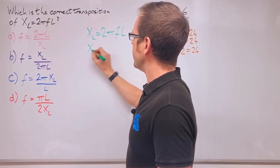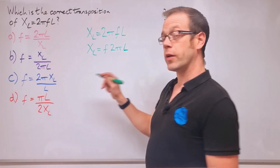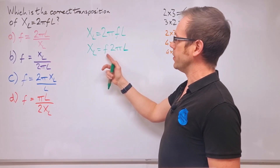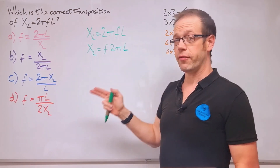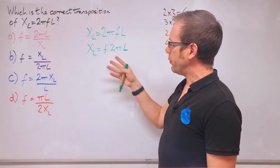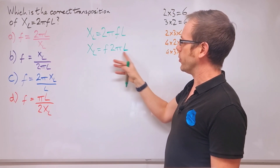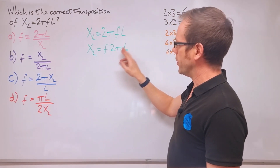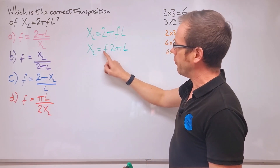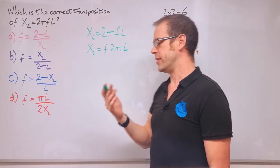So we can jumble this up and rewrite it as XL equals f times 2πl. We've just rearranged the order of the multiplication — it's the same long string of multiplication, just in a different order, and changing the order of multiplication doesn't change the final outcome. Now we can look at this differently and say: we've got f and we're multiplying it by 2πl, so let's think of that as just a chunk of numbers, a block in its own right.